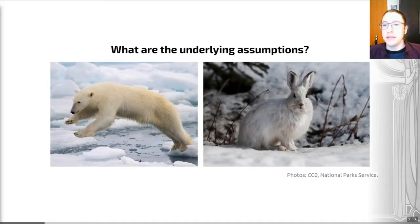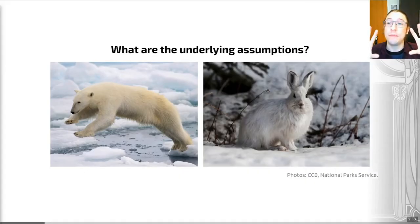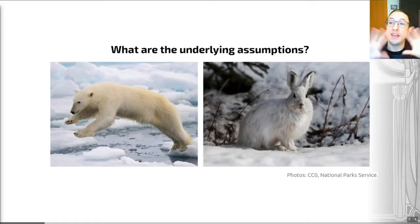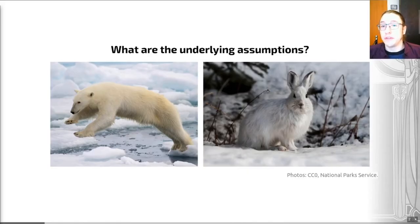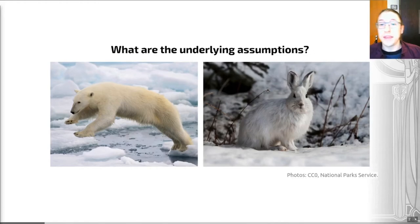In many circumstances, when we take the relationship between an organism and its environment, but also the relationships between the different species within an ecosystem, uniformitarianism does apply. This is the idea that we can use processes that occur today and relationships we see in living organisms to infer things for fossil ecological communities. We can make inferences about ancient organisms and environments based on analogies with organisms that are living today.